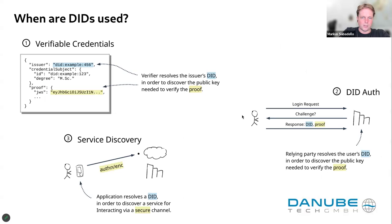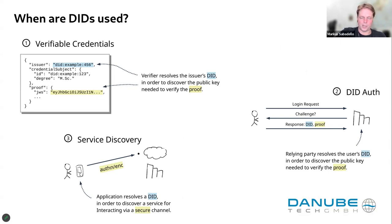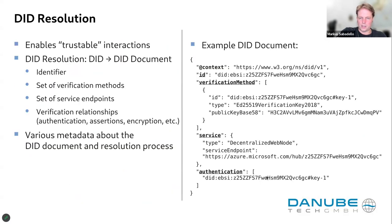Going back to the verifiable credentials use case: a verifiable credential would be signed with a key that has the assertion method relationship in the DID document. You would not use a key with the authentication purpose for that. If you use a DID to log in — to just prove that you control the DID — then you would use a key listed under authentication. These are different purposes for the keys. There are also encryption keys for a separate purpose.